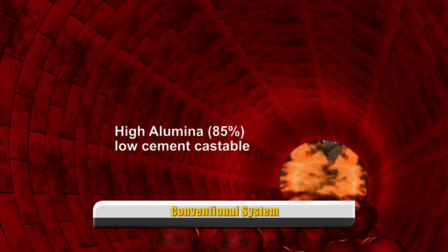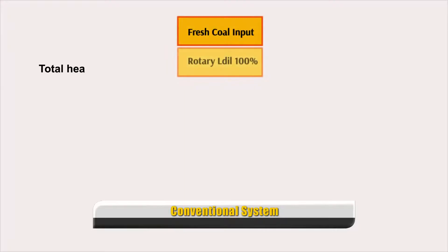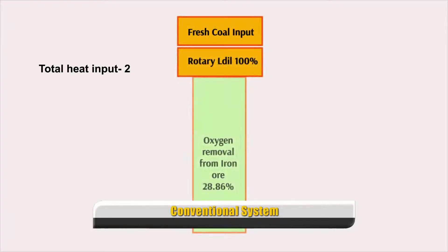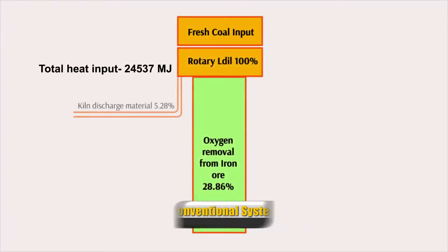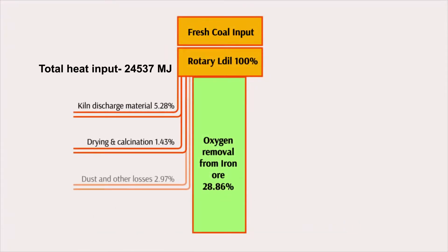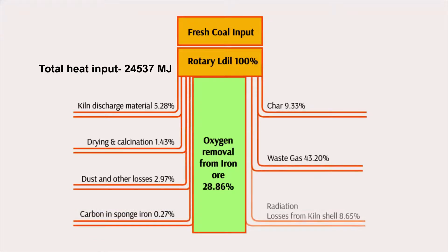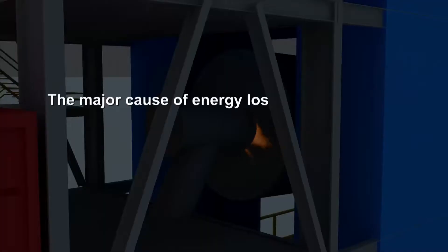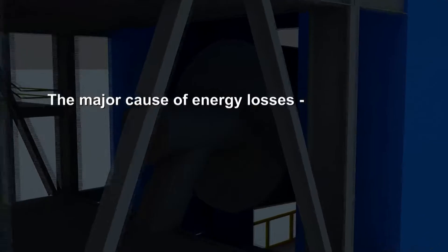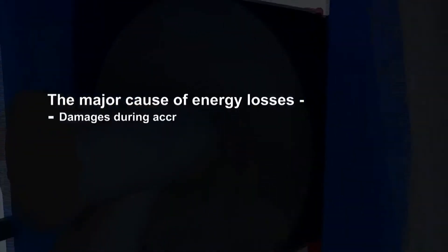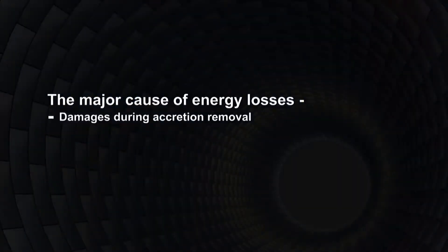The total heat input for a typical DRI plant is 24,537 megajoules, out of which radiation losses from the surface of the rotary kiln are found to be 8 to 10 percent. The major causes of energy losses in case of conventional refractory system are damages during accretion removal,